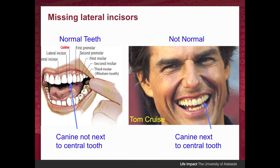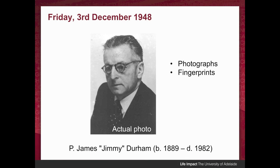The autopsy also reports the man had no lateral incisors — the front teeth between the middle teeth and the canines. The most famous example of someone without a lateral incisor is Tom Cruise, where his canine is right next to his central tooth, but only on one side. The Somerton man had it exactly symmetrical across both sides. Because of that symmetry, it's quite likely it was congenital rather than being lost by some accident when he was young. Then on the 3rd of December, police photographer Jimmy Durham took photographs of the dead man and also took his fingerprints.